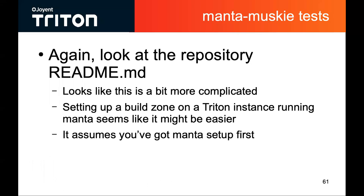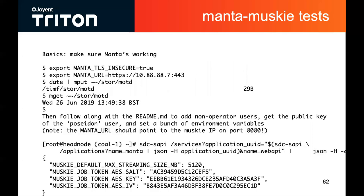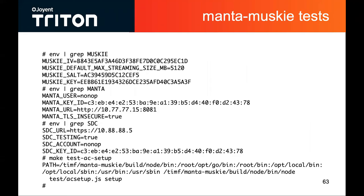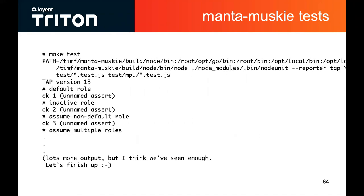Here's us running the Manta Muskie tests — they look a bit more complicated. This was the first time I ran them while preparing for this presentation and I hadn't had to develop changes for Manta Muskie before. Setting up a build zone in the Triton instance would be easier because it has specific requirements about the network configuration, and it assumes that you've already got Manta set up and running, which is a pretty reasonable assumption if you're making changes to Manta Muskie. I just made sure that was running and then literally just followed along with the readme — adding non-operator users, and running a script that the repository has to set up some test accounts. We managed to get the tests kicked off and running.